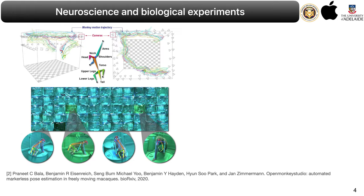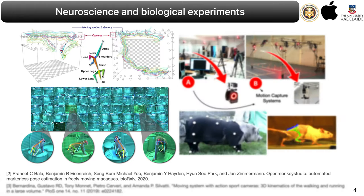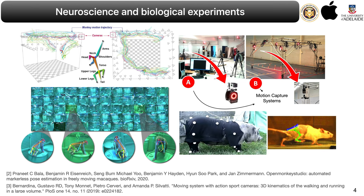Similarly, there are efforts in neuroscience and biological experiments to analyze the behaviors and movements of animals in three-dimensional space. The details of such 3D movements provide a rich stream of information about the animal's behavioral state, allowing us to draw inferences about the interaction between the animal and its surrounding world. In such experiments, the 3D information is typically captured either by using commercial marker-based motion capture systems such as Vicon or OptiTrack on animals, or using a very complicated multi-view rig setup.